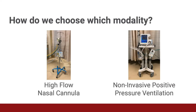How do we choose between high flow nasal cannula and non-invasive positive pressure ventilation for suspected COVID patients? High flow nasal cannula is preferred for patients in moderate respiratory distress — for example, those breathing at a rate above 30 but not significantly fatigued or using accessory muscles. If a patient fails to improve with high flow nasal cannula, consider a trial of non-invasive positive pressure ventilation. Patients with more severe distress, appearing to be fatiguing and using accessory muscles, should start on non-invasive positive pressure ventilation at the beginning.